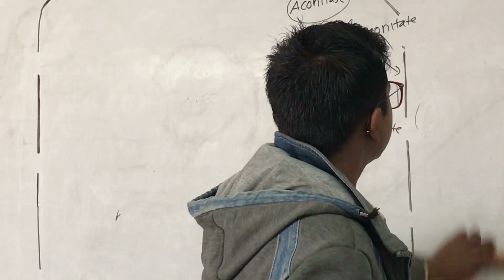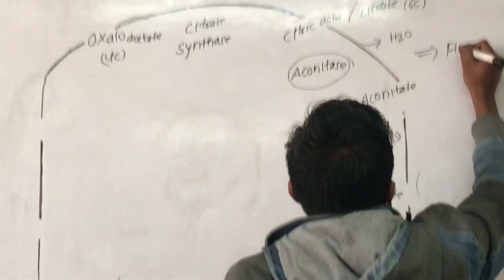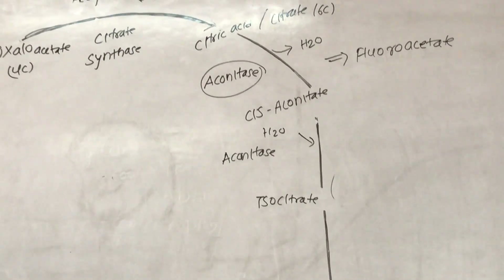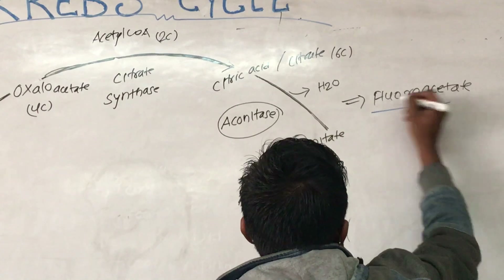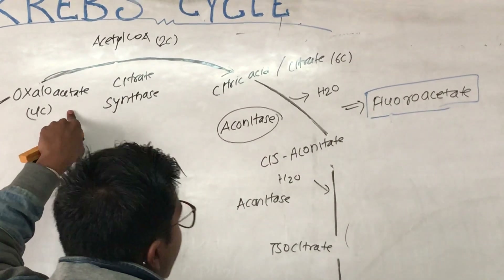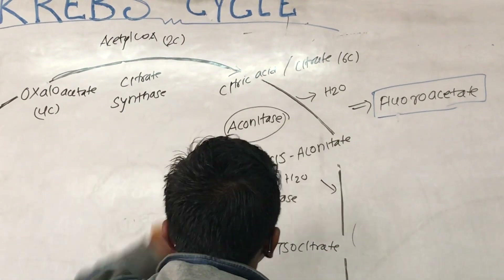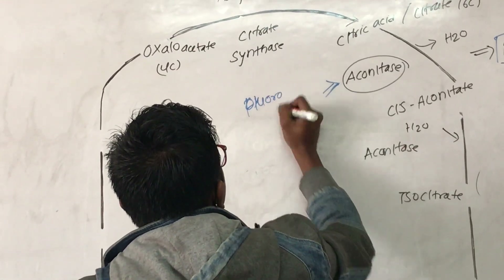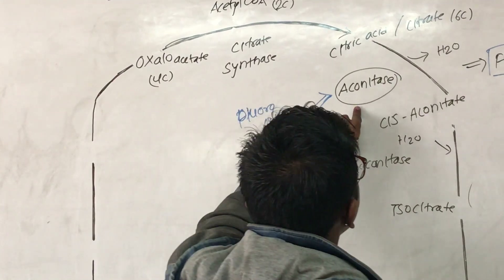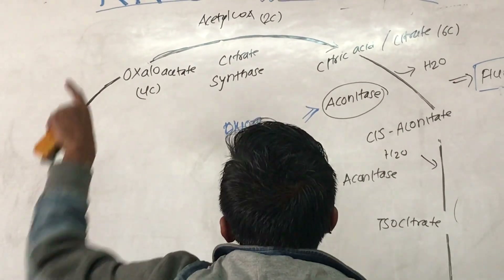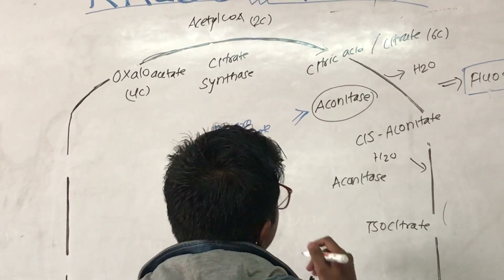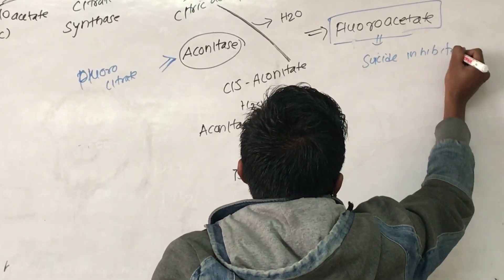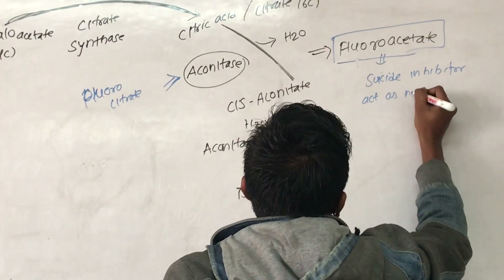This reaction is inhibited by a compound known as fluoroacetate. Fluoroacetate reacts with oxaloacetate to form fluorocitrate, which inhibits aconitase. So the Krebs Cycle cannot proceed, ATP is not formed, and it is a suicide inhibitor. Fluorocitrate acts as a non-competitive inhibitor of aconitase.